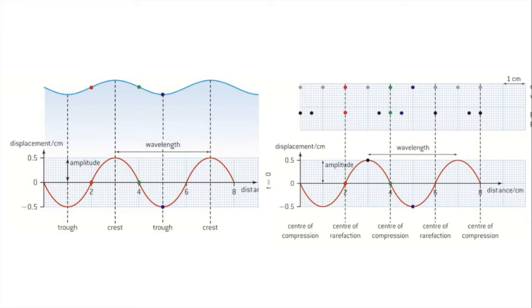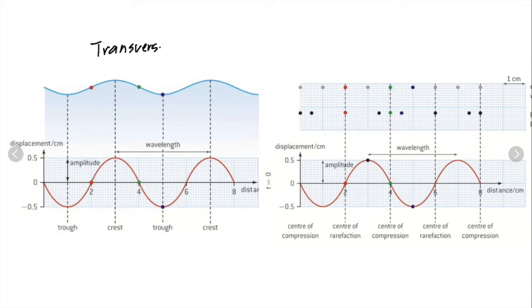Now we're going to put these ideas together and start looking at graphs. This is one of the things you have to do a lot in this unit — being able to interpret a graph along with transverse or longitudinal waves. The first thing I want you to see is this one on the left, which is a transverse wave. We can see that the particles are moving along the wave.